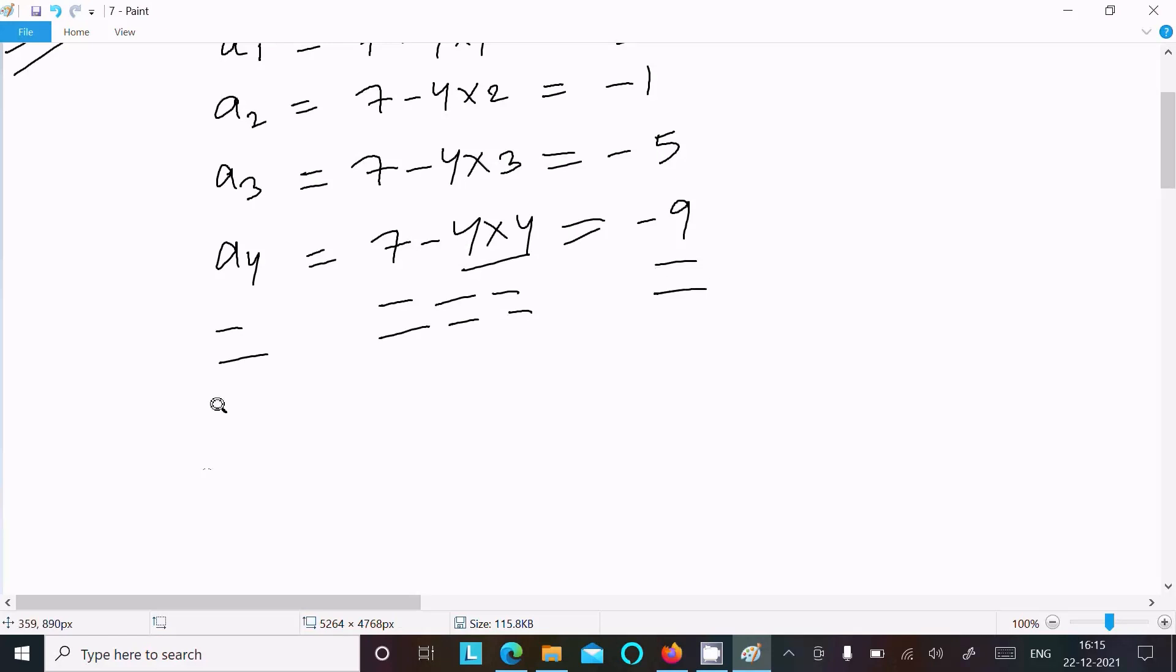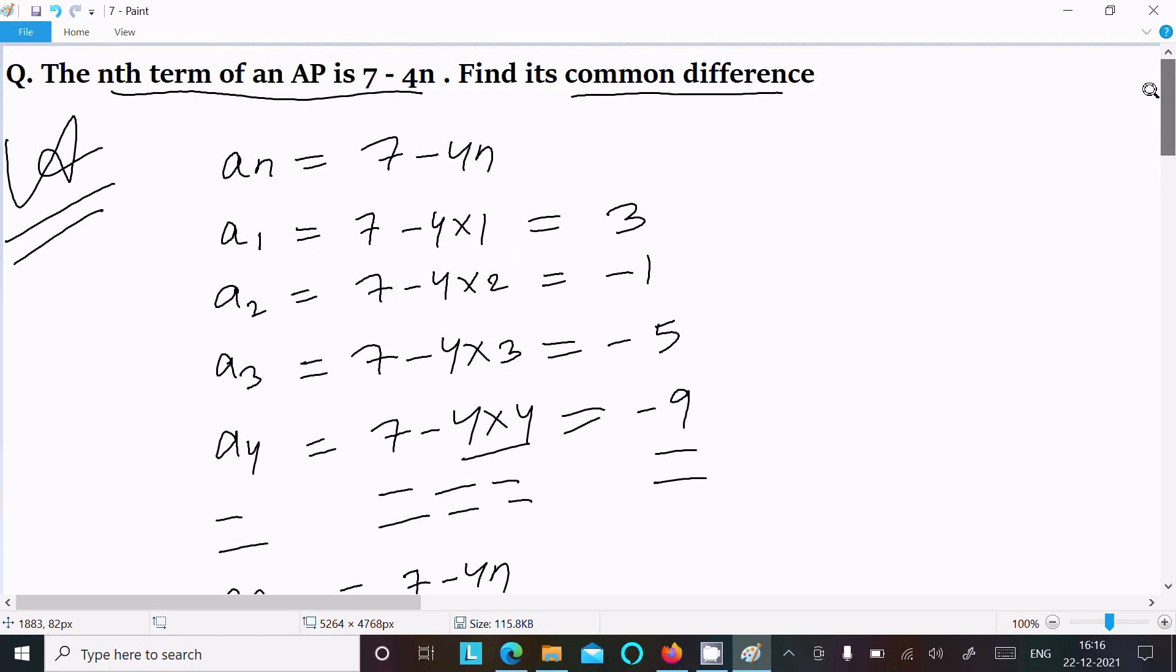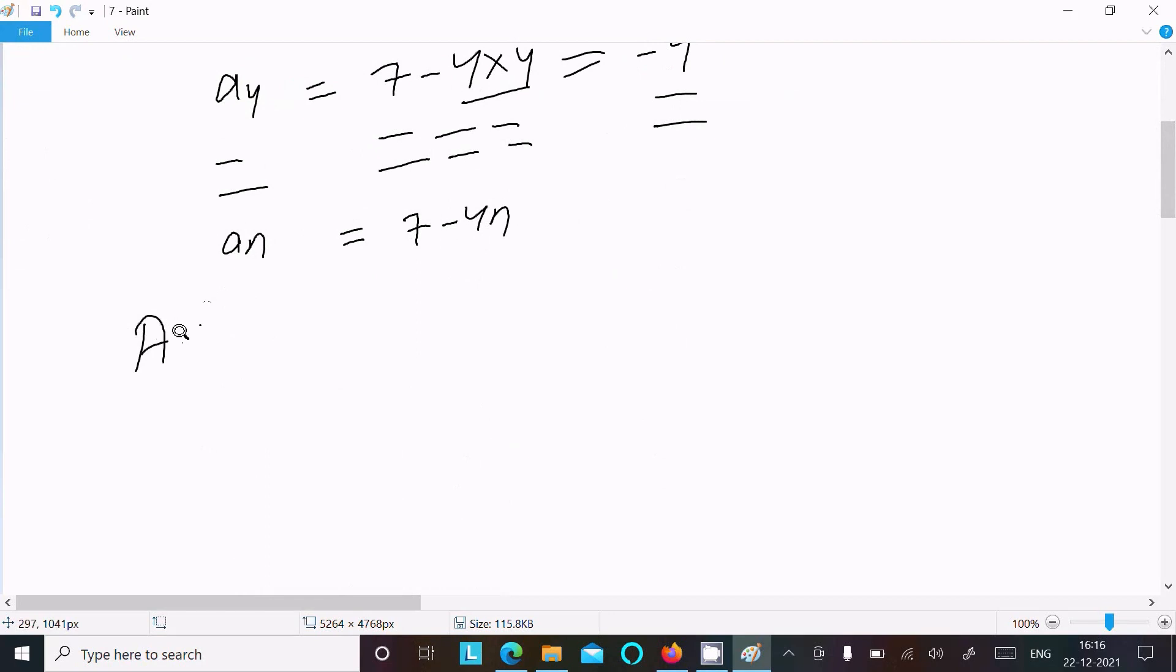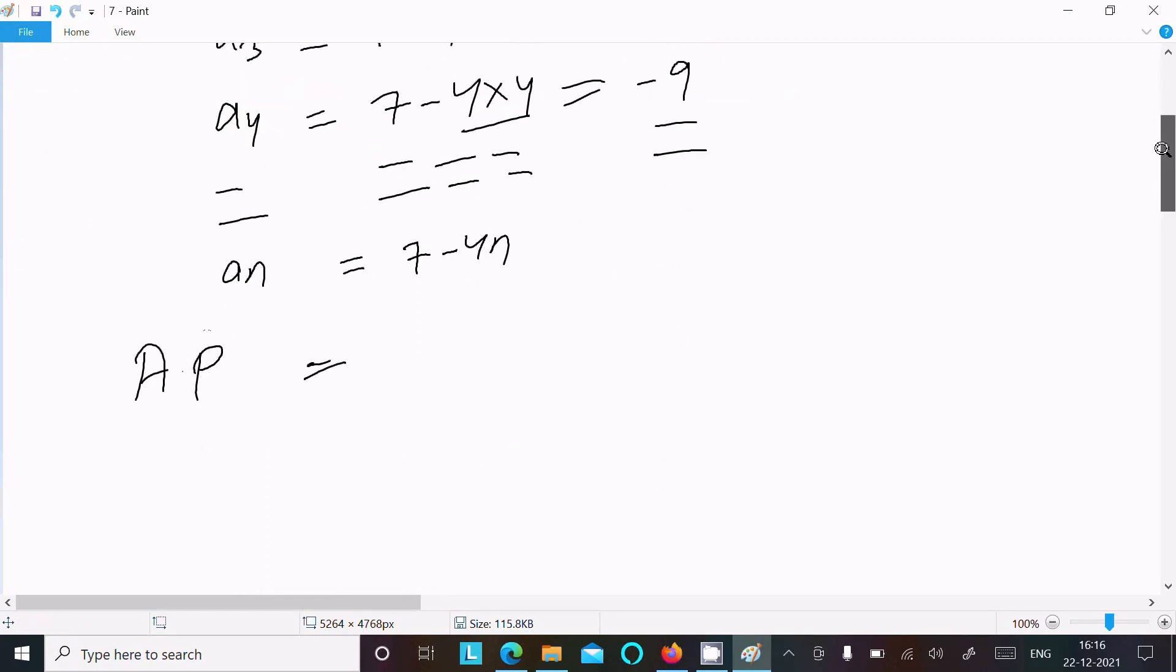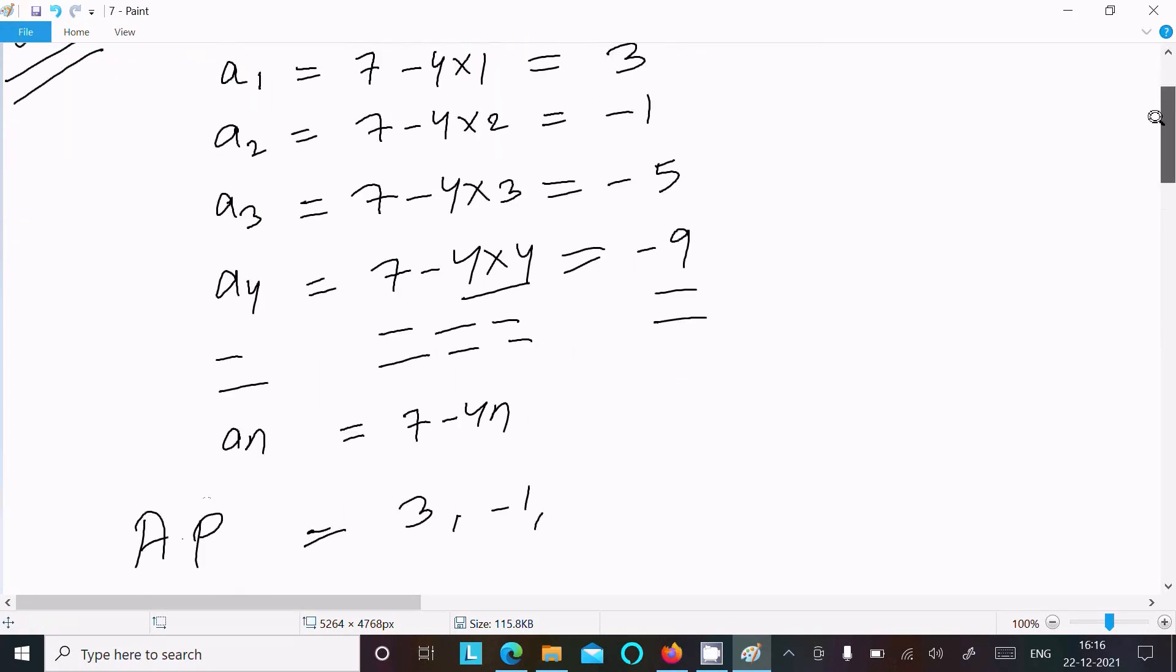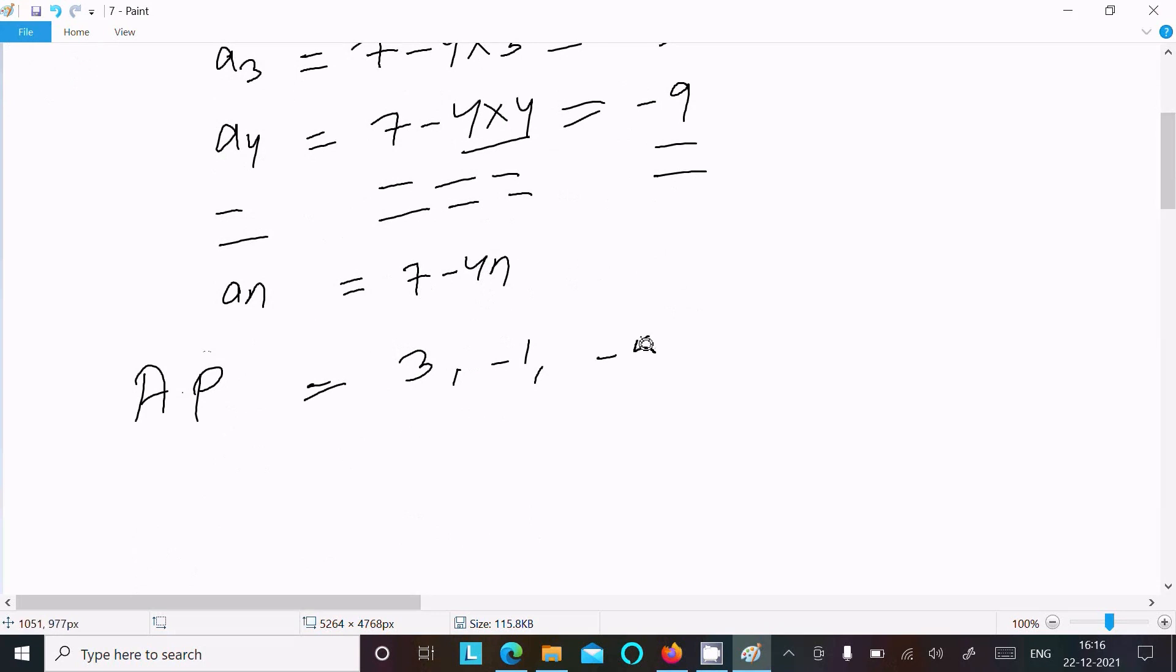So here an term that comes 7 minus 4n, 7 minus 4n. So our AP is: first here 3, next is minus 1, minus 5, minus 9, and this continues 7 minus 4n.